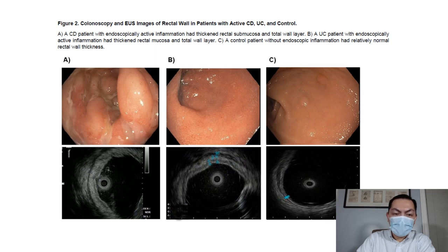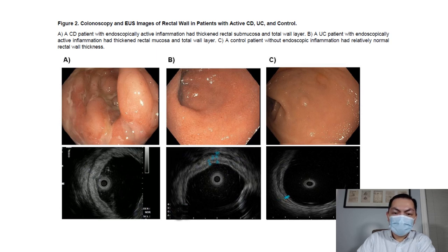The ability to differentiate active Crohn's disease from active UC by evaluating mucosa and submucosa wall layer thickness at the time of colonoscopy may help confirm inflammatory bowel disease subtype diagnosis and perhaps recharacterize patients with IBD unclassified diagnosis — this will need to be tested in future studies. Furthermore, the ability of endoscopic ultrasound to evaluate transmural healing in patients with IBD at the time of colonoscopy, and how this can be used to predict disease outcomes, will need to be further evaluated. Thank you.